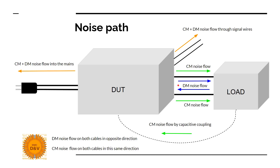The main parameters affecting the amplitude of common mode noise would be voltage of the noise source, value of the capacitive coupling, and the frequency of the signal. Going further, let's see the PWM signal noise spectrum.